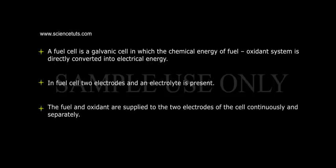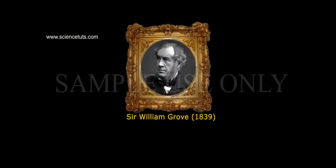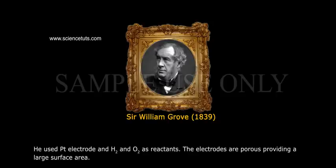A fuel cell is a galvanic cell in which the chemical energy of a fuel-oxidant system is directly converted into electrical energy. In a fuel cell, two electrodes and an electrolyte are present. The fuel and oxidant are supplied to the two electrodes continuously and separately. Sir William Grove developed the first fuel cell in 1839, using platinum electrodes and H2O2 as reactants.